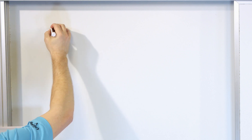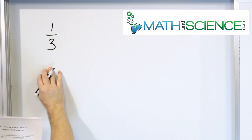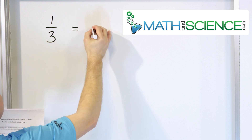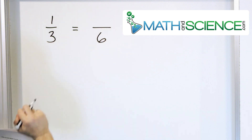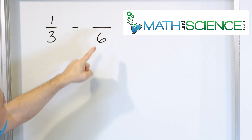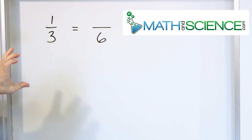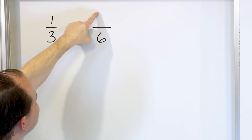Let's take a look at the following thing. What if I tell you that the fraction 1/3 is equal to some fraction with the number 6 on the bottom? And your job is to tell me what goes up here. You see, this is an equivalent fraction.